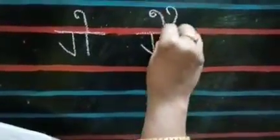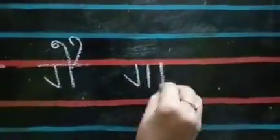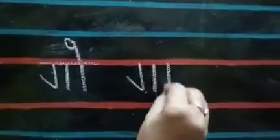Ga plus E. Ga plus E equals Gay. Ga plus AI equals Gai. Ga plus O equals Go. Ga plus.